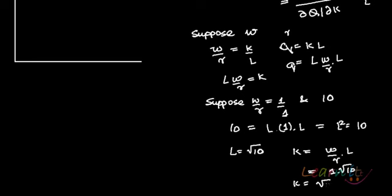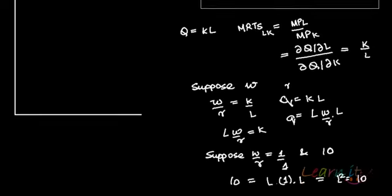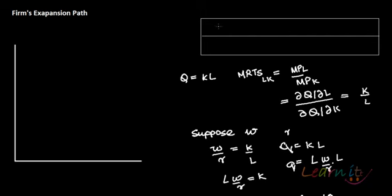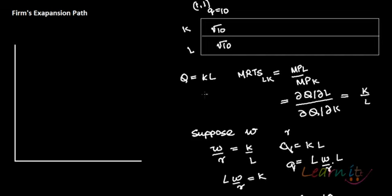So when you want to produce Q = 10 and your input prices W/R = 1, your cost-minimizing input choices are L = √10 and K = √10.